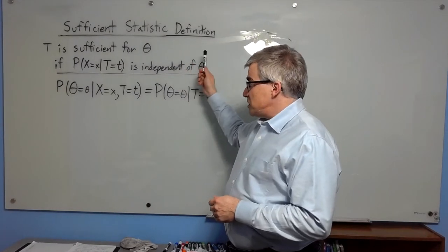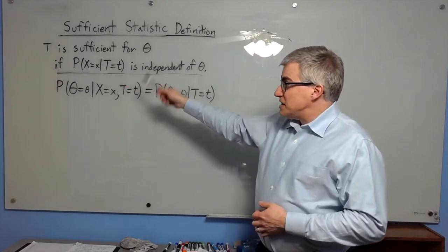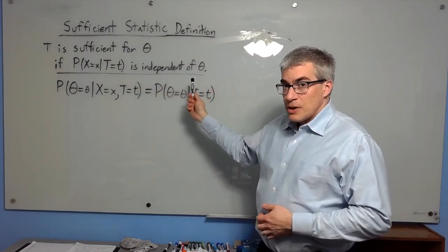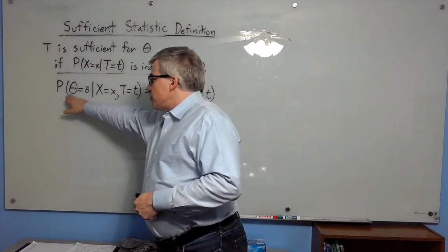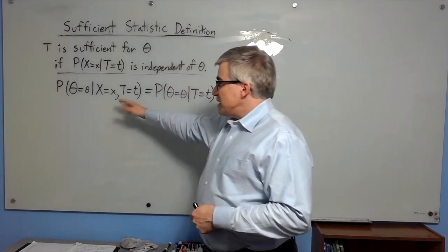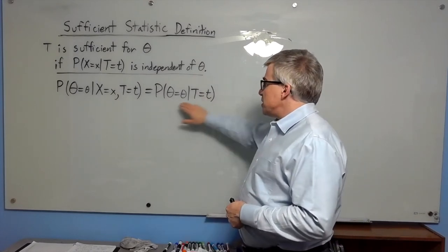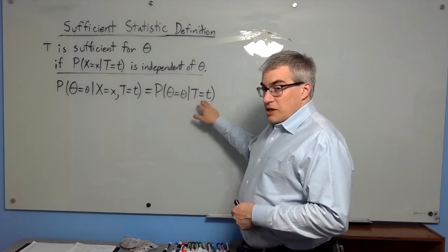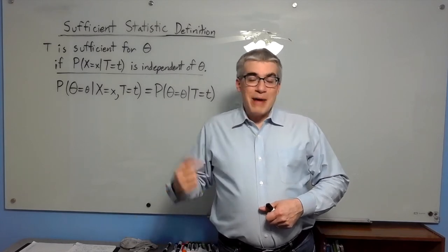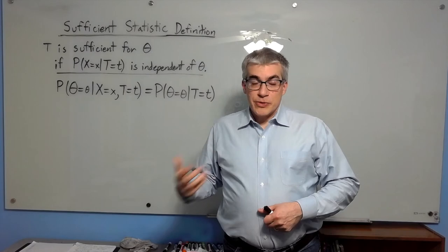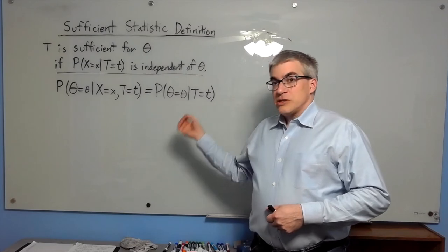The definition of sufficient statistic: t is sufficient for theta if the probability that x equals x given t equals t is independent of theta. What they are trying to say is that the probability of getting some value of theta given your data and the sufficient statistic is the same as the probability that theta equals that value given just the sufficient statistic. In other words, if you know the sufficient statistic, you don't need to go back to the data for more info — there's no more info to be had. You know everything about theta if you know the sufficient statistic.